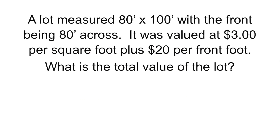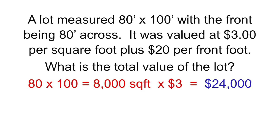Let's read this last question: a lot measured 80 feet by 100 feet, with the front being 80 feet across. It was valued at $3 per square foot plus $20 per front foot. What is the total value of the lot? I saved the easiest one for last. The first thing we do: 80 times 100 feet equals 8,000 square feet, and we take that times $3, which equals $24,000.